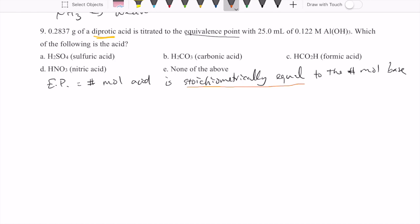Another definition that's important here is the word diprotic means that there are two acidic protons in the acid, so the formula of a diprotic acid is H2X.